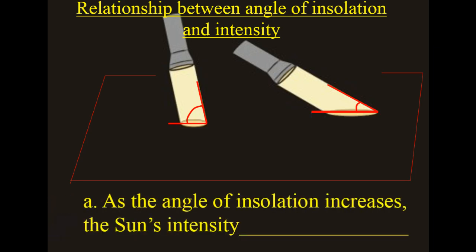The stronger energy comes when it's directly overhead. So we have another relationship: as the angle of insolation increases, the sun's intensity also increases.